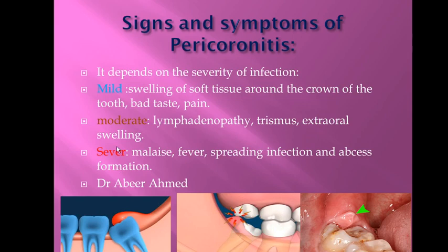In the case of severe infection, the patient feels malaise and fever, there is a spread of infection, abscess formation, and pus. As you can see here, this is the operculum — the soft tissue which covers the unerupted crown or tooth.